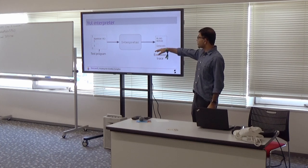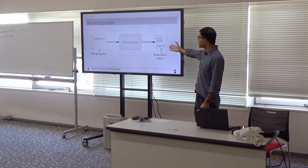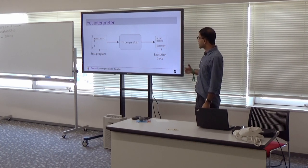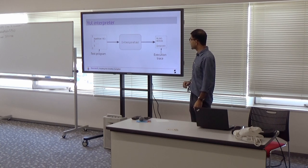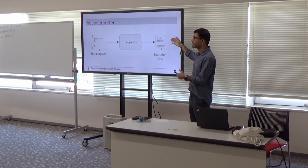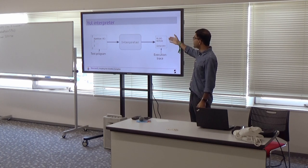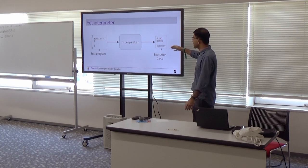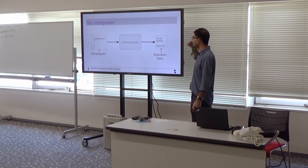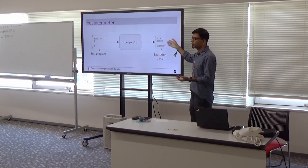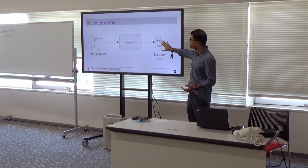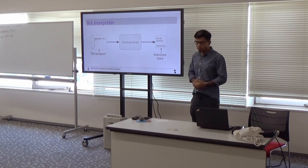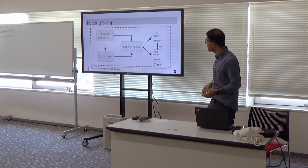For example, you have the test program on the left, you feed it to the Yule interpreter, it executes it step by step, and then creates this execution trace shown on the right, which can look like you load something from memory from some address x and then store some value at address y, do a data copy, so on and so forth. So we've built the execution trace of the test program using the Yule interpreter.